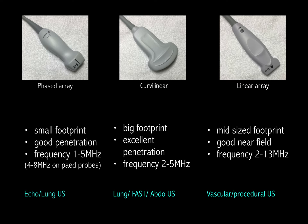Curvilinear probes are utilised primarily for abdominal and pelvic examinations in the critical care context. They have excellent penetration, and the larger footprint, which affords a wider field of view, isn't a problem since there are no ribs in the way. You've probably used linear probes for vascular access. Probes used for this purpose typically have higher frequencies and so have good resolution at shallow depths but handle depth poorly. Lower frequency linear probes are used to image deep vascular structures.